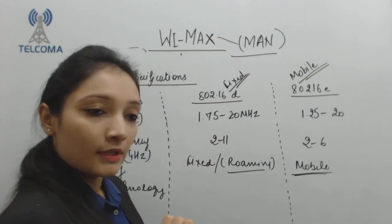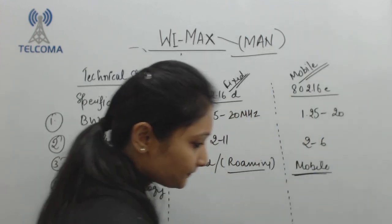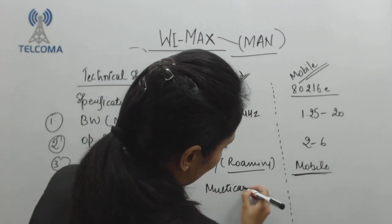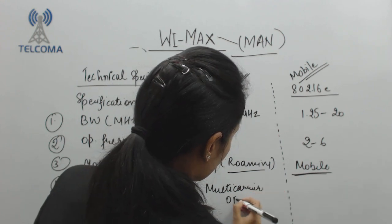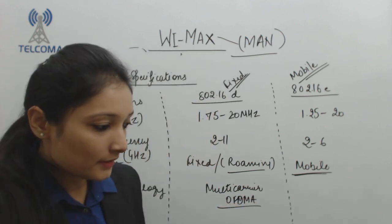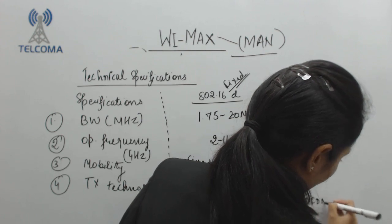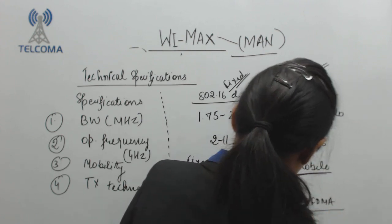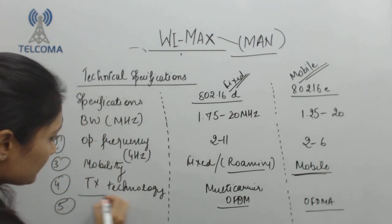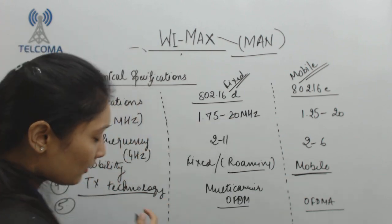The transmission technology for WiMAX is multi-carrier OFDM — Orthogonal Frequency Division Multiple Access — used for both fixed and mobile access. This is the access method for the WiMAX system.